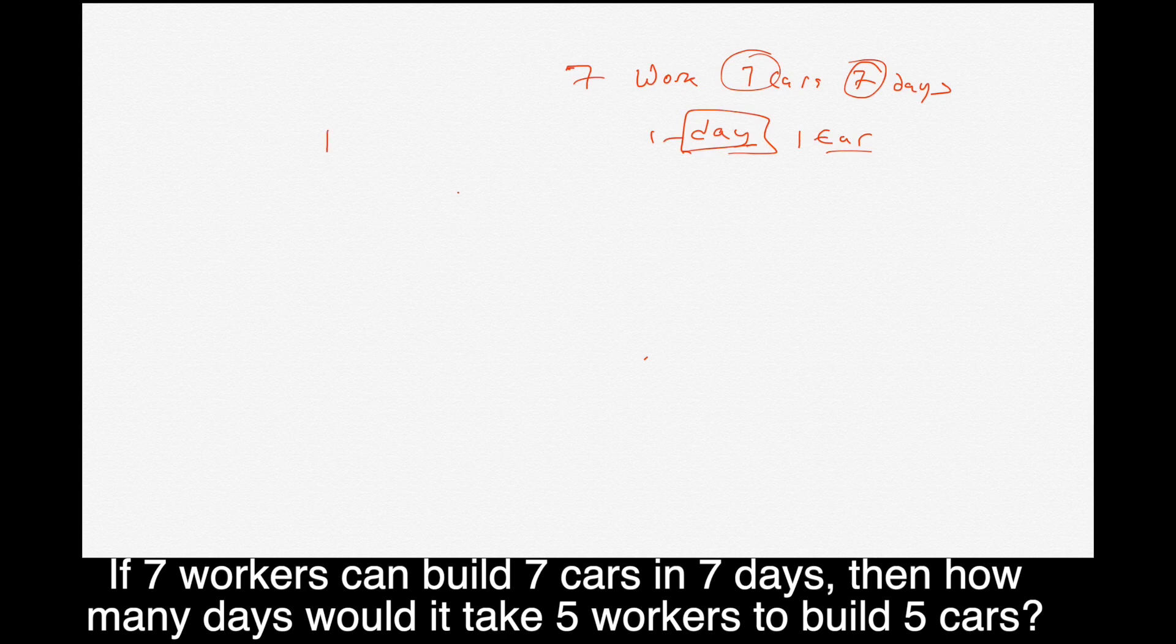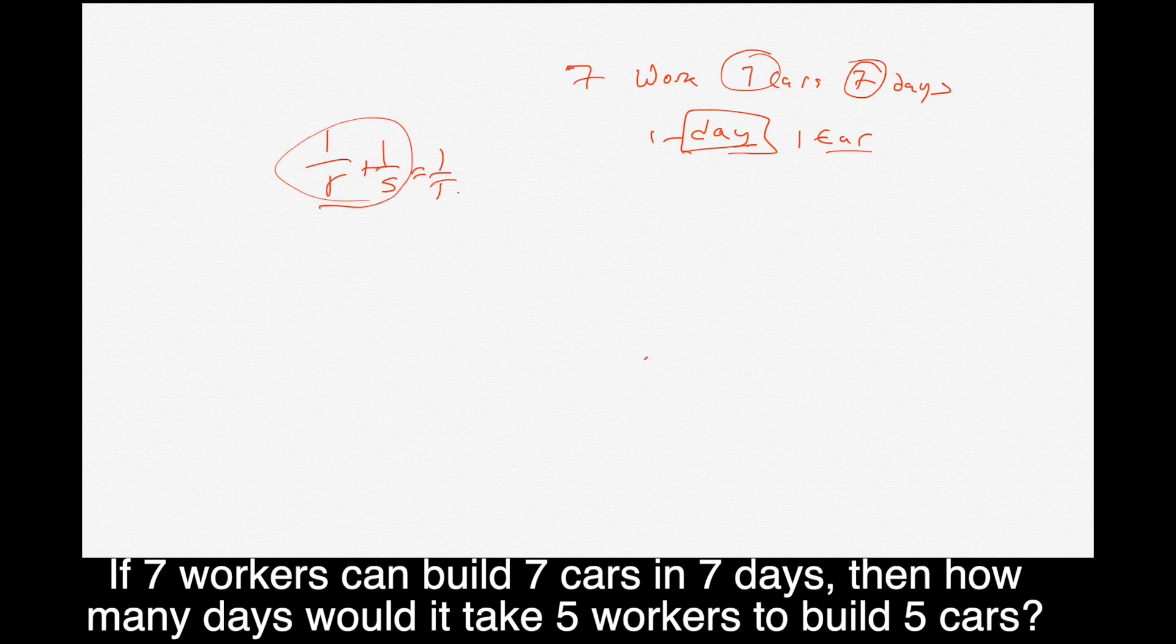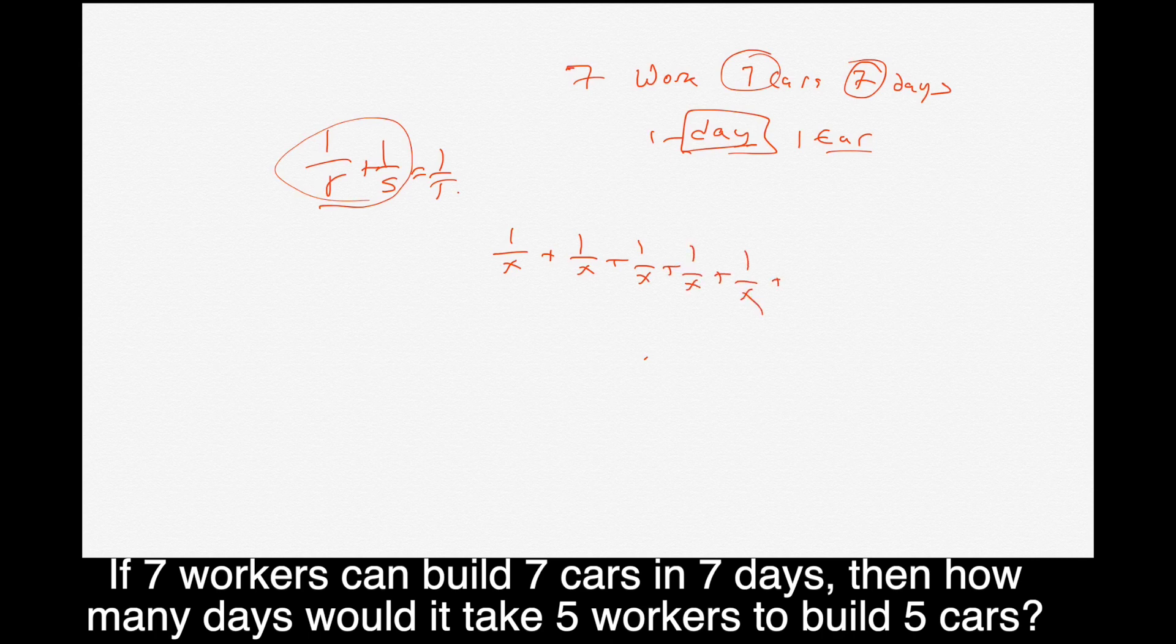So that equation, the one over R plus one over S equals one over T, we have seven workers and they're all equal. So we can call them all one over X. And I'm going to do it the long way just so you know how it's done. Okay, we have seven of them. And then all of that, so how long does it take them to build one car? Alright, this is where we put the T down there. It takes one day.